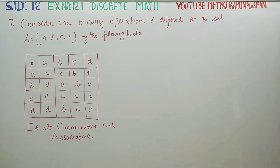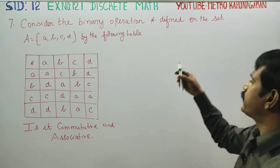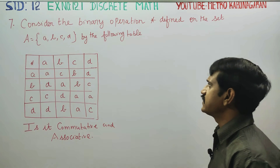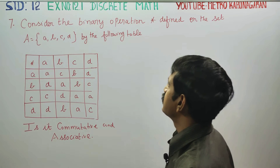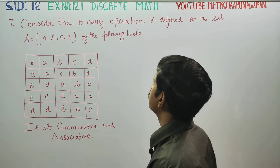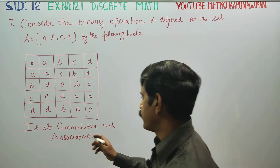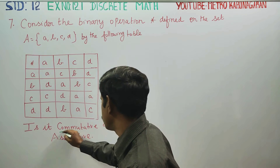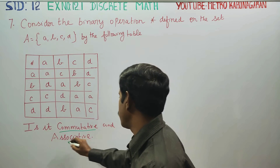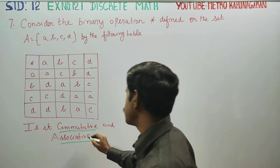Dear 12th standard students, in Exercise 12.1, sum number 7, consider the binary operation on the set given by the following table. We need to prove or show that it is commutative or associative.